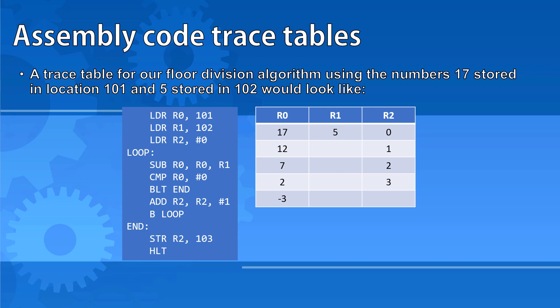We now subtract again, and it's now down to 2, we compare it, it's still not less than 0, so we go on, we add another value, it's 3. We loop back up to the top, and we subtract, it's now minus 3, we compare it, it is less than 0, so we branch to the end, where we store it.